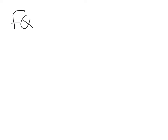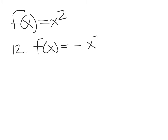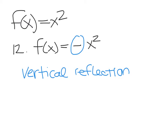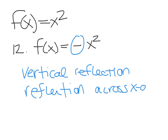Problems 12 through 17 are about transformations compared to the parent function f(x) equals x squared. For number 12, the equation is f(x) equals negative x squared. The negative is what's different — it flips the parabola, reflecting it over the x-axis so it opens down. This is called a vertical reflection, or a reflection across the x-axis.